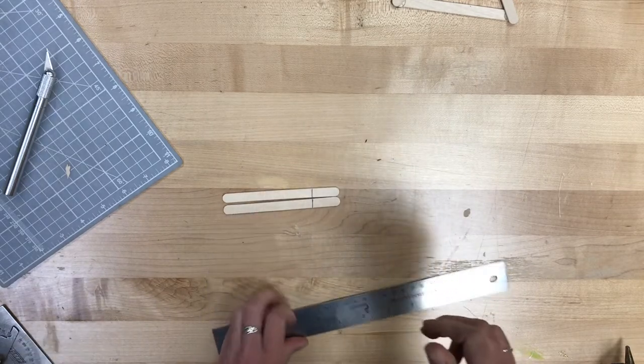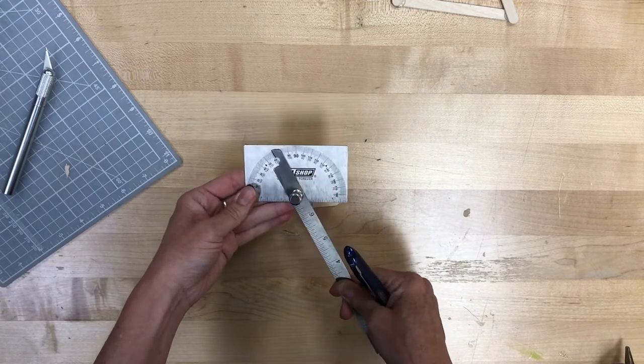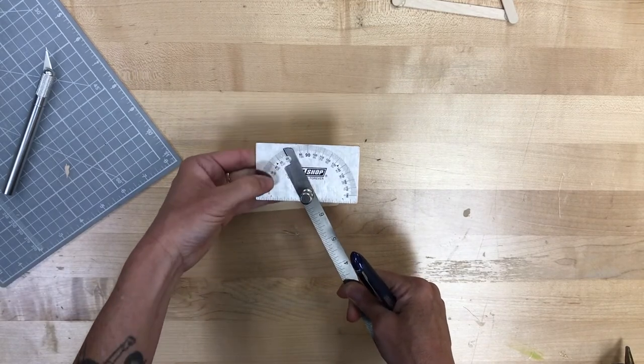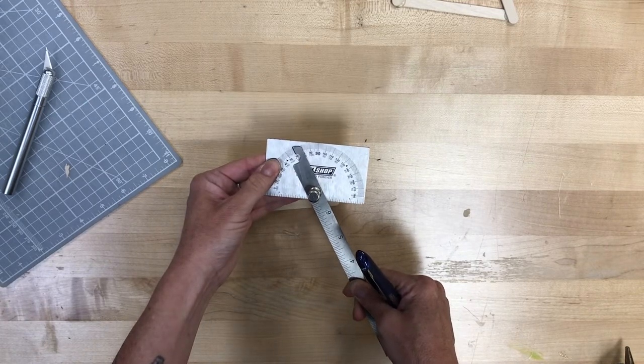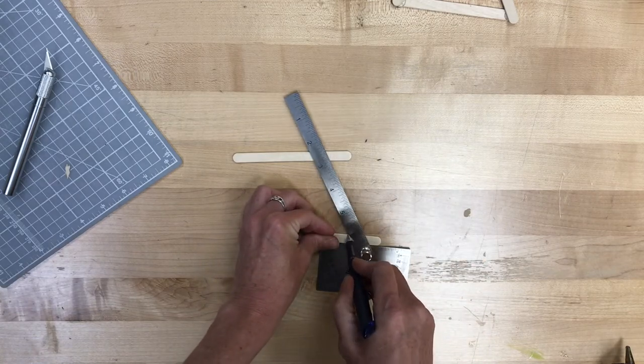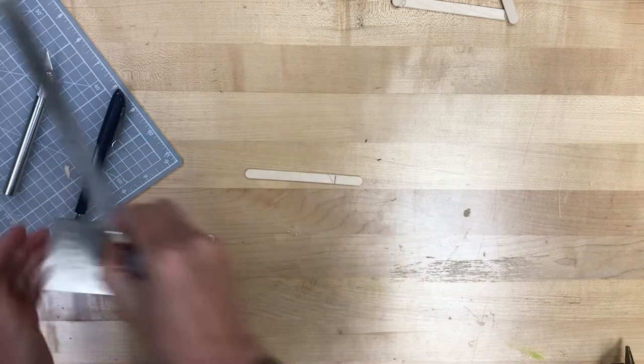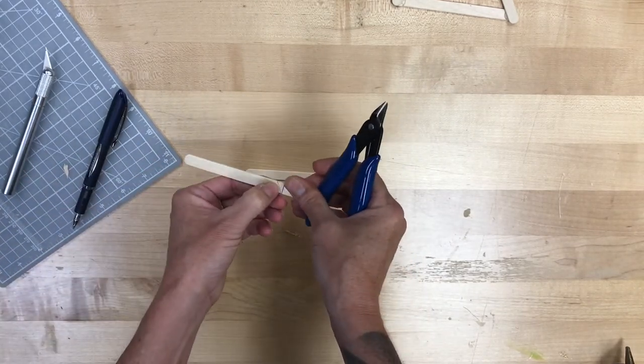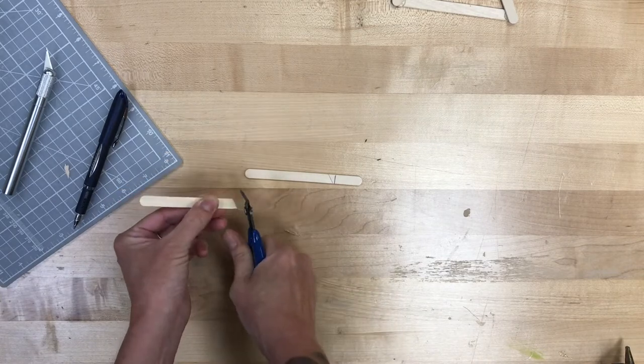So I'm going to make a mark at about 90 millimeters, just under, and then I want a 60 degree angle. So I'm going to use my protractor tool here to make sure that I am going to get that 60 degree angle right at the point that I want it on my popsicle stick. And once I draw that in, I'm going to cut them at that angle.